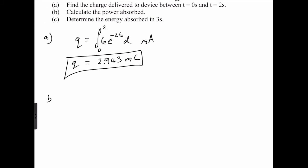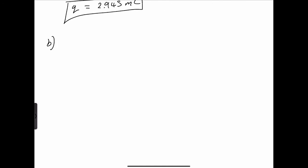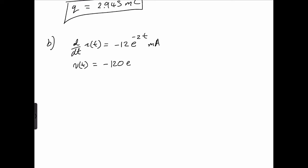Part B: calculate the power absorbed. The voltage is given as 10 times the derivative of the current, so we take the derivative of the current. The derivative of i(t) = 6e^(−2t) is −12e^(−2t) milliamperes per second. Thus v(t) = 10 × (−12e^(−2t)) = −120e^(−2t) millivolts.